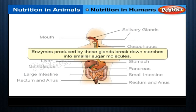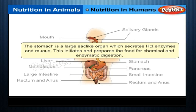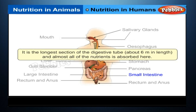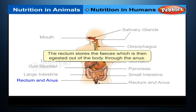Salivary Glands: Enzymes produced by these glands break down starches into smaller sugar molecules. Esophagus: It is a long tube connecting the mouth to the stomach, using rhythmic wave-like movements called peristaltic movements to move food. Stomach: A large sac-like organ which secretes HCl, enzymes, and mucus, initiating chemical and enzymatic digestion. Small Intestine: The longest section of the digestive tube, about 6 meters in length, where almost all nutrients are absorbed. Rectum and Anus: The rectum stores feces, which is then expelled from the body through the anus.